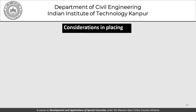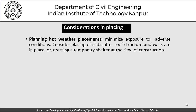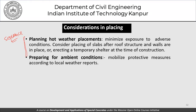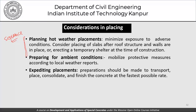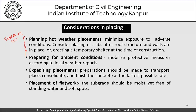Hot weather placements should be planned to minimize exposure to adverse conditions. Consider placing slabs after roof structures and walls are in place, or erecting a temporary shelter, so that walls protect slabs from adverse wind effects. Mobilize protective measures according to local weather reports. Expedite placement: preparation should be made to transport, place, consolidate, and finish concrete at the fastest possible rate. For flatwork, the subgrade should be moist yet free of standing water and soft spots.